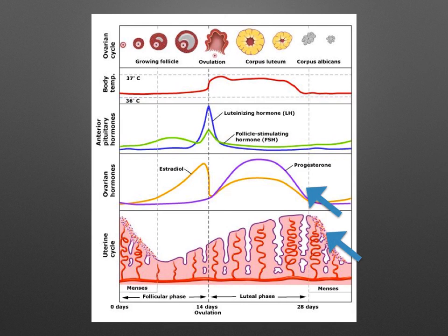If no fertilization takes place, the oocyte undergoes autolysis. Oestrogen and progesterone have inhibited FSH and LH. The corpus luteum degenerates and all the hormones fall. Oestrogen and progesterone levels become very low, the endometrium breaks down and menstruation begins. Then FSH and LH levels start to increase again.